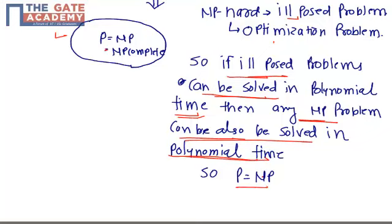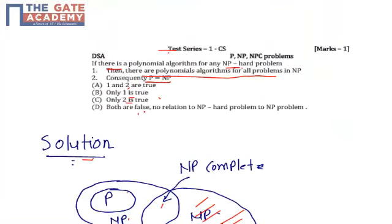Therefore, P equals NP as well. The correct option is A: there are polynomial algorithms for all problems in NP — meaning all NP problems can be solved in polynomial time — and consequently P equals NP. So the correct option is A.